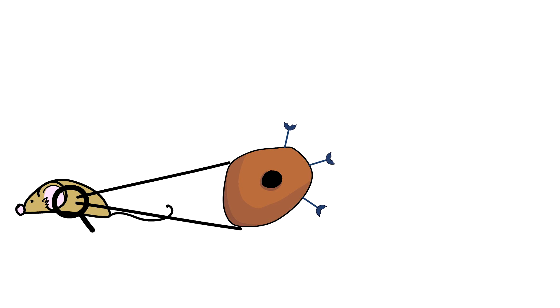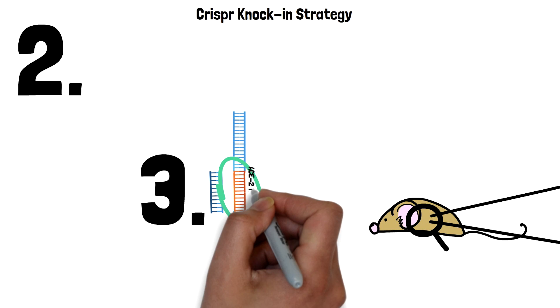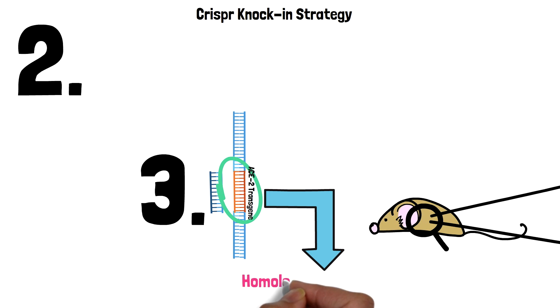The CRISPR-Cas9 knock-in strategy is used for this model and will be used to insert the human ACE2 transgene using homology directed repair.